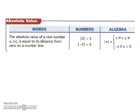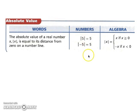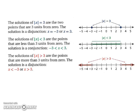Absolute value: the absolute value of a real number x, written as two vertical lines with x between them, equals the distance from zero on a number line. Since distance is always positive, whether you start with positive five or negative five, the absolute value is positive five. When solving, you don't know whether it started as negative or positive, so you solve for both. For example, if the absolute value of x equals three, both negative three and positive three are solutions — both filled-in circles.